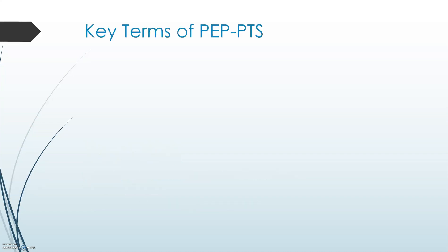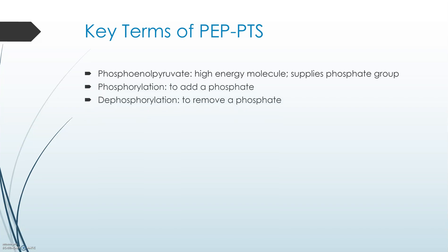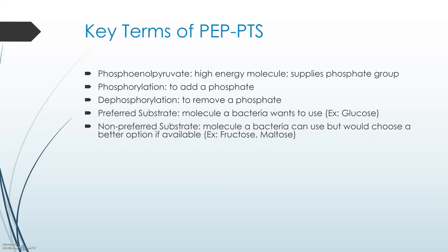A couple of key terms for the PEP-PTS: phosphoenolpyruvate is the high-energy molecule that supplies the phosphate group for the system. Phosphorylation is the addition of a phosphate, and dephosphorylation is the removal of a phosphate. A preferred substrate is a molecule a bacteria wants to use — glucose in E. coli, for example — and a non-preferred substrate is one a bacteria can use but would choose a better option if available, such as fructose or maltose in E. coli.